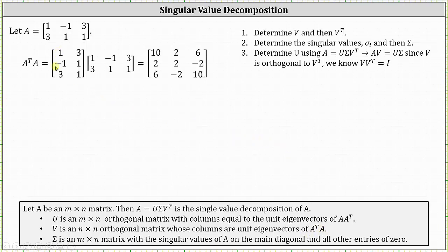To find the matrix A transpose, the first row of matrix A becomes the first column of A transpose, and the second row becomes the second column. A transpose times A results in the three by three matrix shown. You may want to pause the video and check this product.